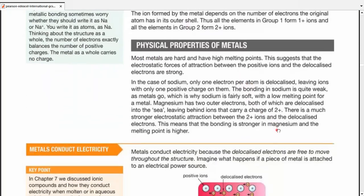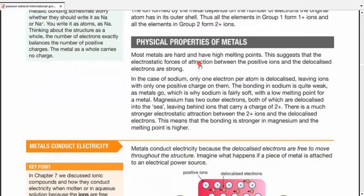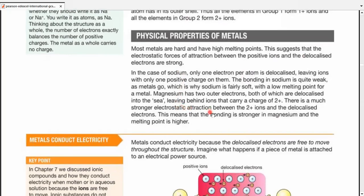Talking about the physical properties of metals, most metals are hard and have high melting points. This suggests the electrostatic forces of attraction between the positive ions and the delocalized electrons are strong and in a very big number. In the case of sodium, only one electron per atom is delocalized, leaving ions with only one positive charge in them.